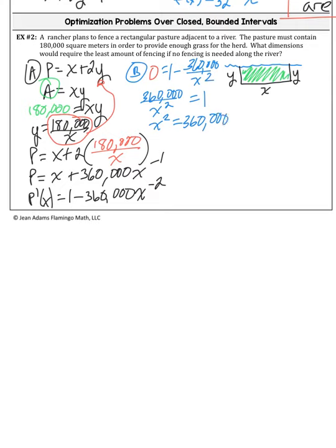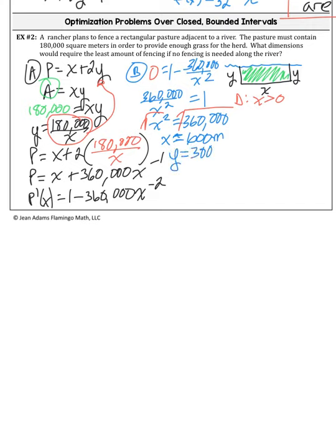Since x represents a distance, x must be positive, so our domain is x > 0. Our critical value is x = 600. Substituting back: 180,000 = 600y, so y = 300 meters. Now we need to verify that this actually minimizes the perimeter — this is important and you will lose points for skipping this justification.